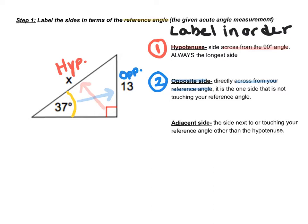The last side is the adjacent side, which is the side directly next to or touching your reference angle, other than the hypotenuse. And if you label the sides in this order, it is always going to be your side that you have left. So this would be your adjacent side.